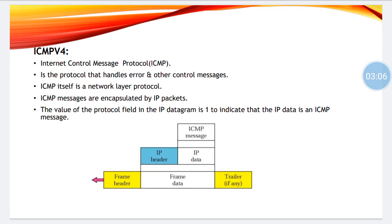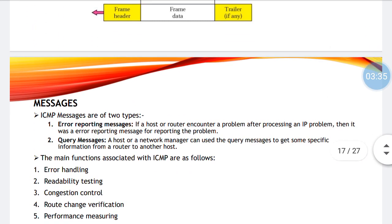After IPv4 header format, we have ICMPv4. It stands for Internet Control Message Protocol. It is a protocol that handles errors and other control messages, and it itself is a network layer protocol. You are also supposed to draw this diagram, which starts with the frame header, frame data, and trailer (which is optional). In frame data, we have IP header and IP data, and in IP data it consists of ICMP messages.